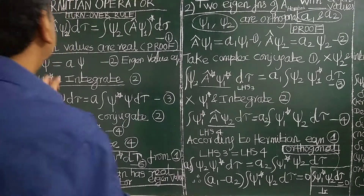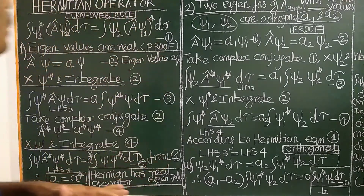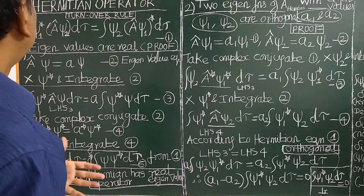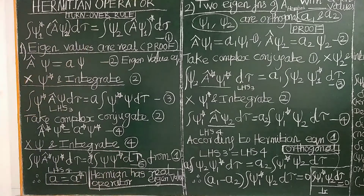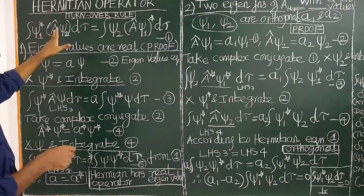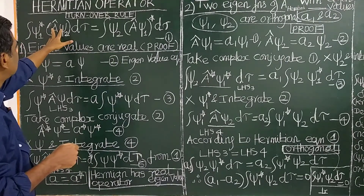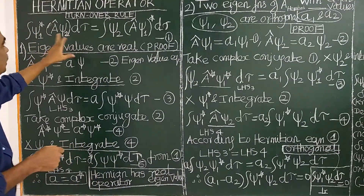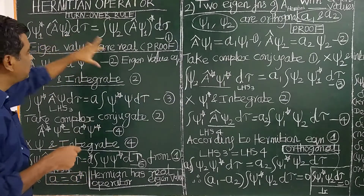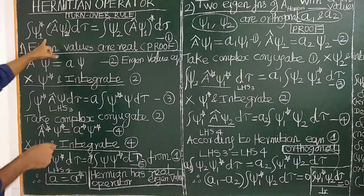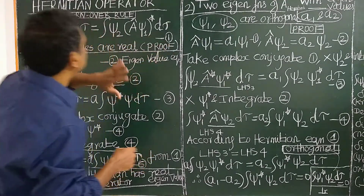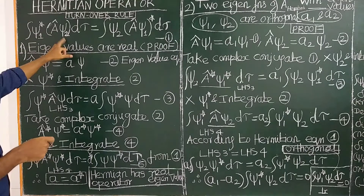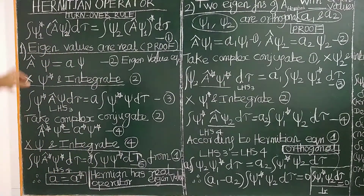Good morning. Today we will see what is a Hermitian operator, what is called a turnover rule, and their properties. First, let us consider an operator A-cap. This operator is Hermitian only when it obeys a specific relationship. Any operator is Hermitian if it satisfies this relationship, where psi-1 and psi-2 are the wave functions of the operator A-cap.